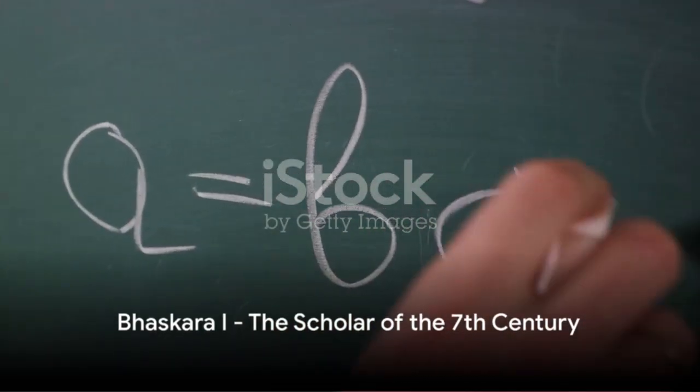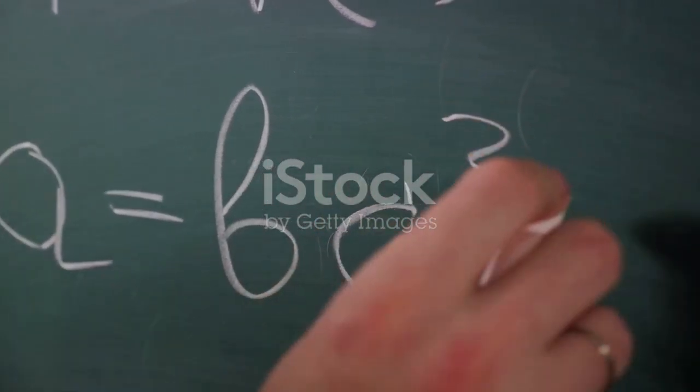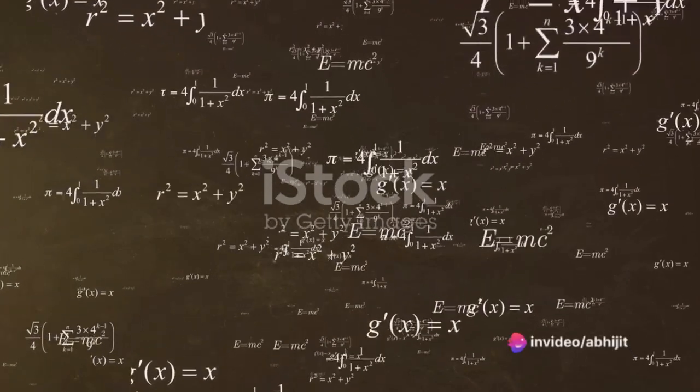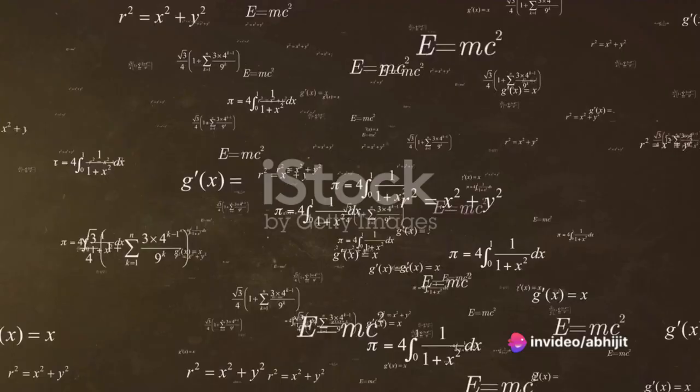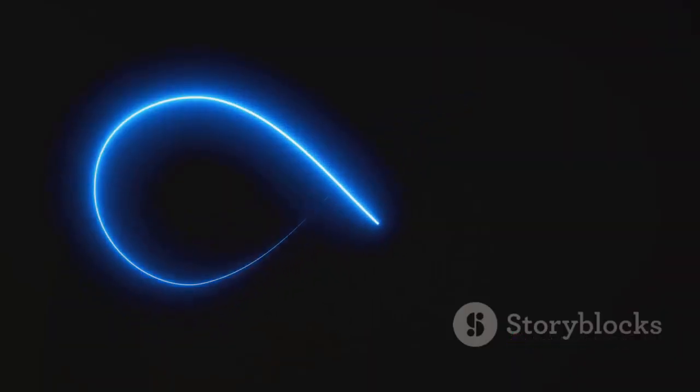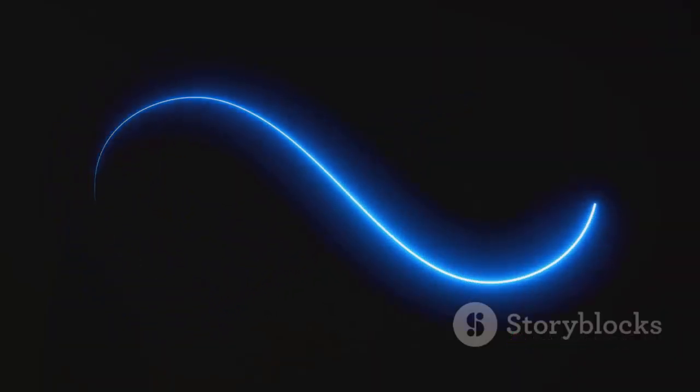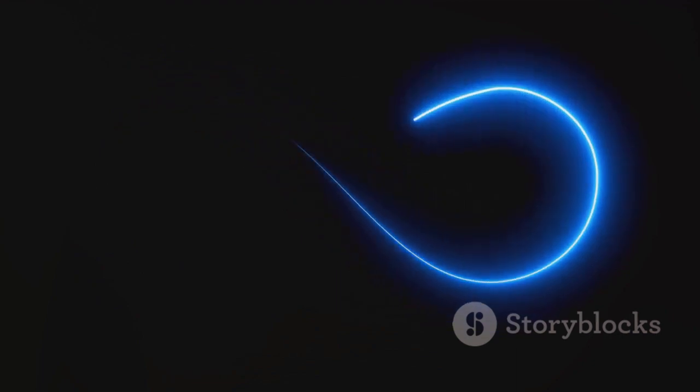Bhaskara Wan, a scholar of the 7th century, is next on our list. Bhaskara Wan was the first to write numbers in the Hindu decimal system with a circle for the zero, and his unique contributions to mathematics include the concept of a mathematical infinity.